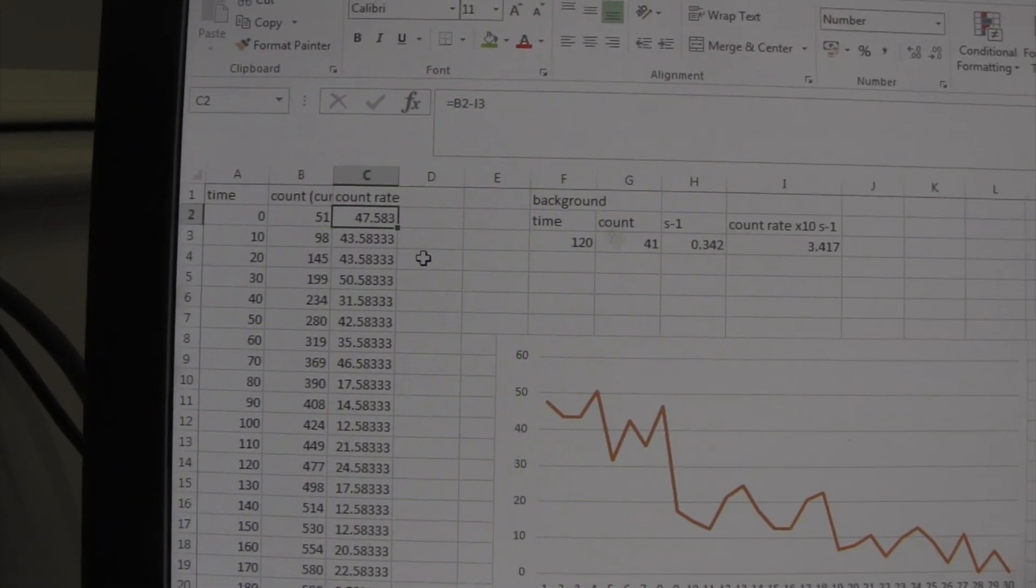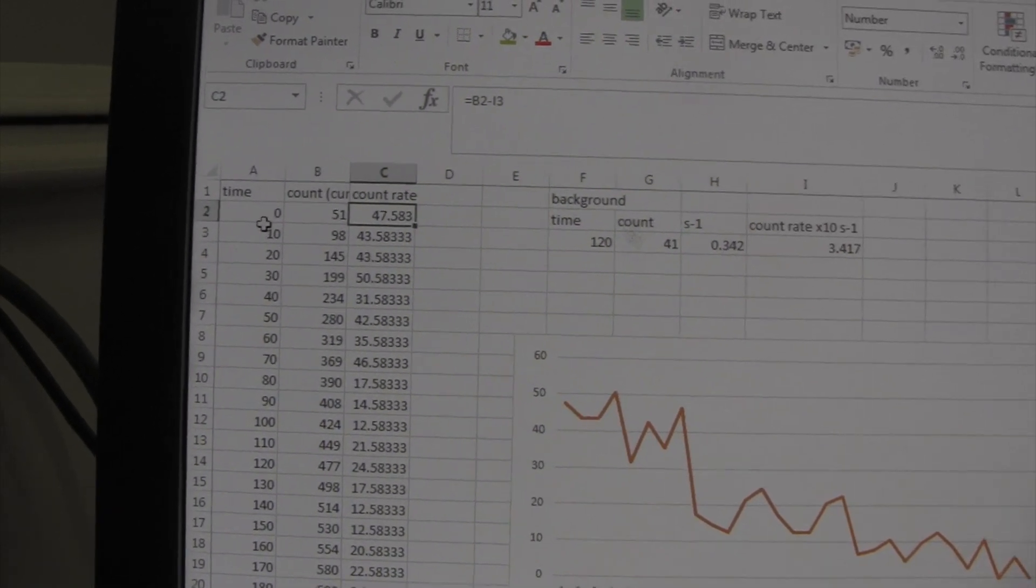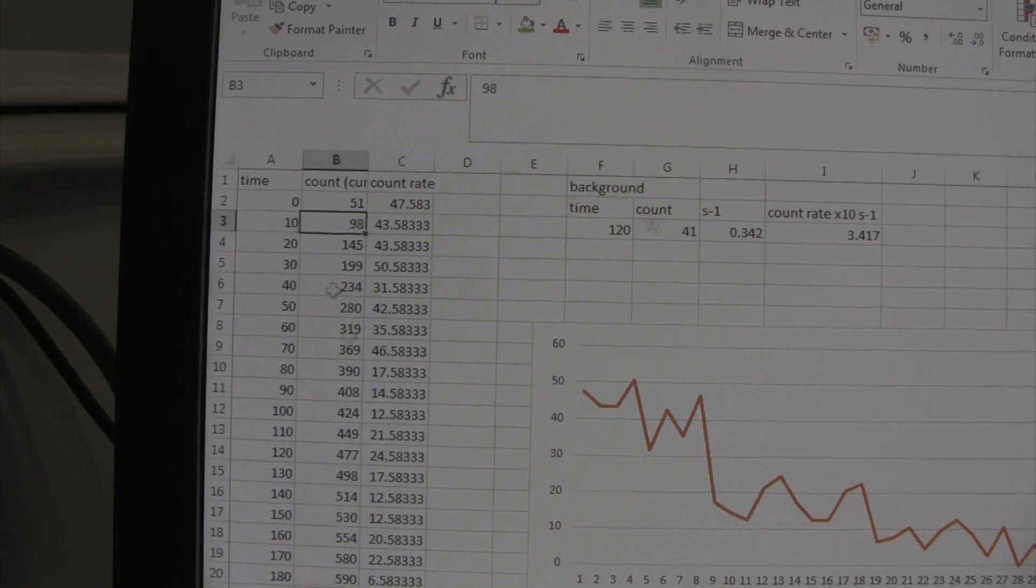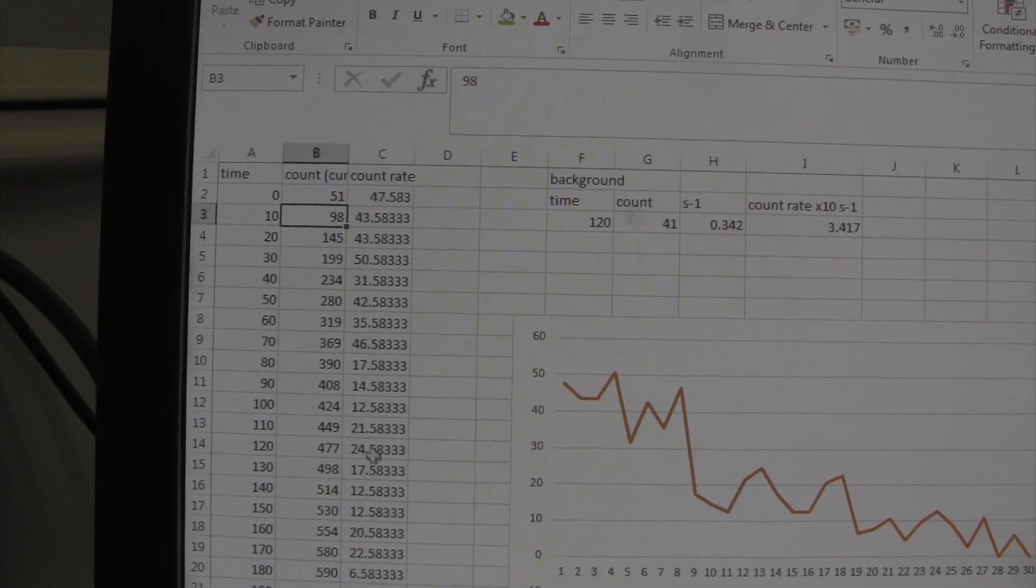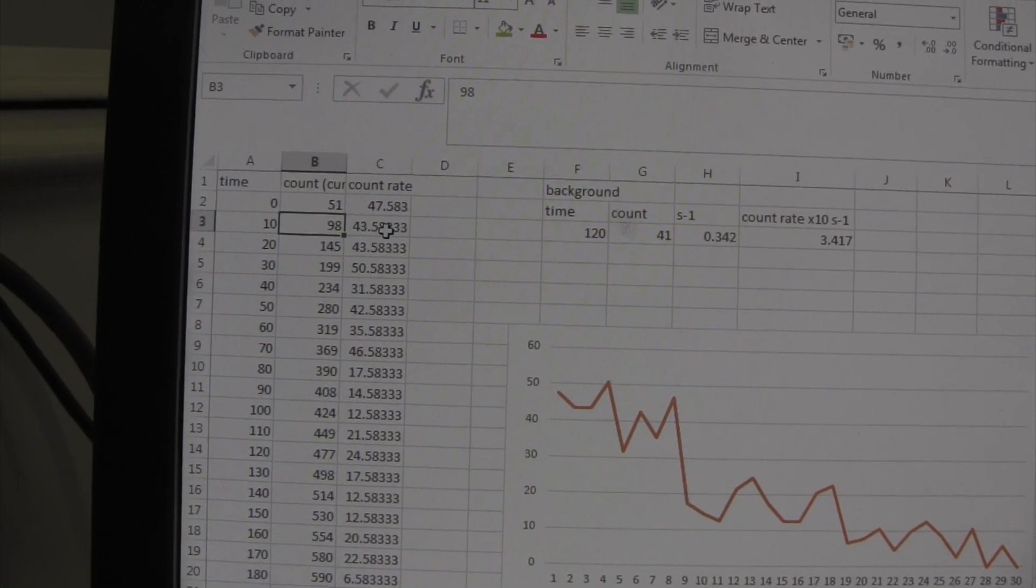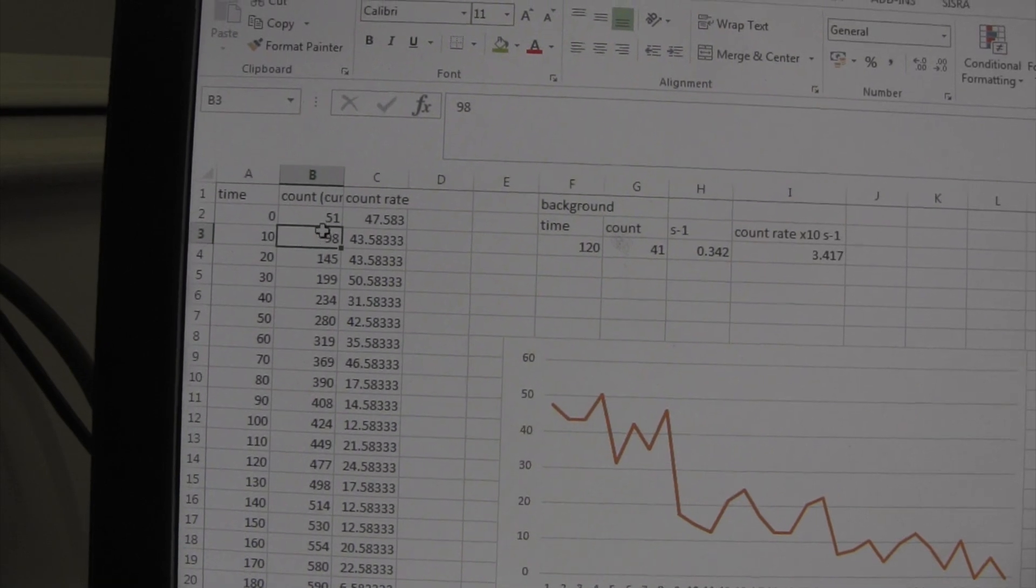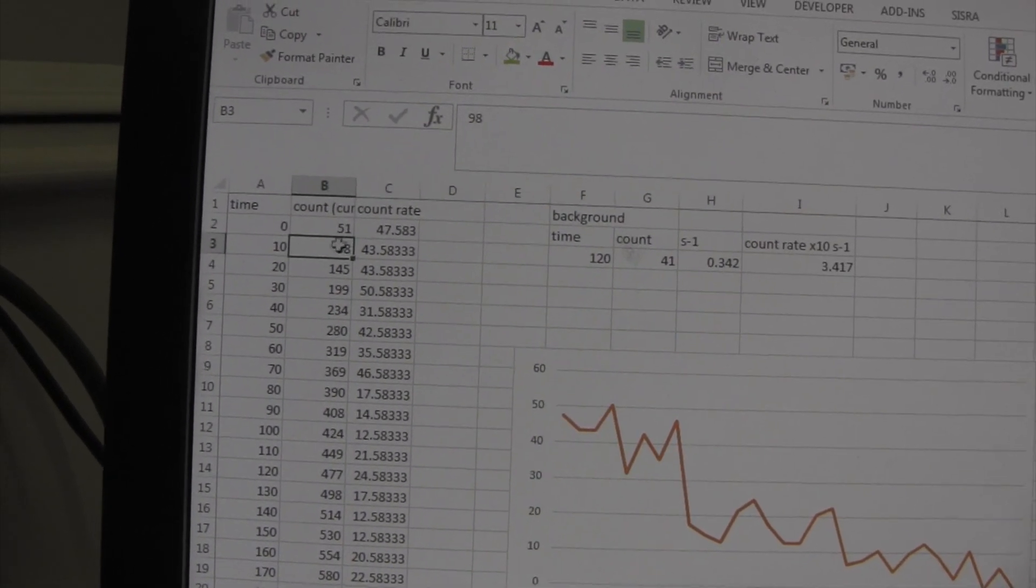So, I've reviewed the footage that I took on my mobile phone, and I looked back through it, and every ten seconds, I wrote down what the count rate was. And I've used this spreadsheet to work out what the count rate was over that ten second period, by just taking one number away from the previous number.